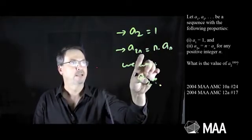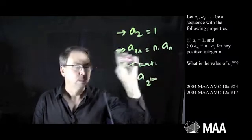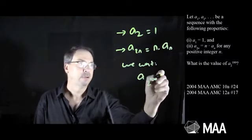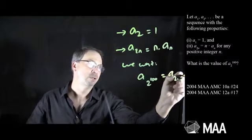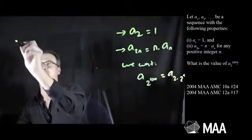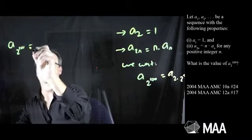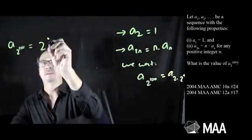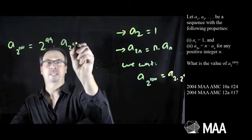For example, if I've got 2 times something, then I get the something times aₙ. Well, I guess a₂₀₀ is actually 2 times something. That's actually 2 times 2 to the 99th. So I can say that a₂ to the 100th would be 2 to the 99 times a₂ to the 99.